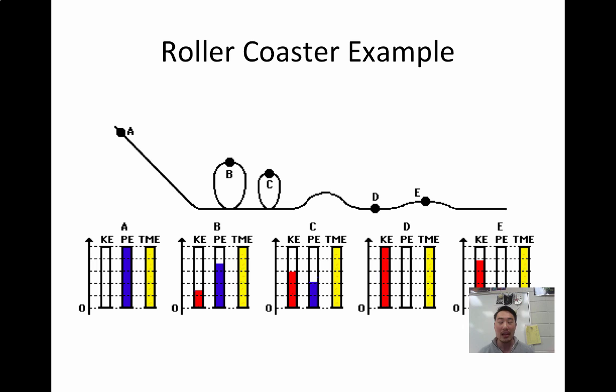So here's another cool fact. The first drop is the highest point that you can ever reach because you can't gain energy throughout the roller coaster. So if the first point is the highest potential energy, you can't get any higher than that. Unless something pushes you.